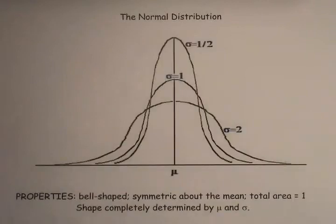In addition, the shape of a normal curve is always completely determined by its mu, its mean, and its sigma, its standard deviation. If you know the mean and standard deviation of a normal random variable, you know exactly what the normal curve associated with that random variable looks like.